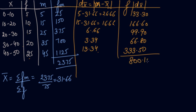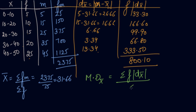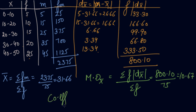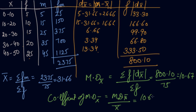Adding all these, you will get the answer 800.16. Now you can easily find out your mean deviation through mean, which is: summation f into deviation from mean, divided by summation f. So 800.10 divided by 75 gives an answer of 10.67. Then you can find out the coefficient of mean deviation through x̄: mean deviation from x̄ divided by mean. So 10.67 divided by 31.66 gives an answer of 0.34. In this way, you can find out the mean deviation using mean in the continuous series.